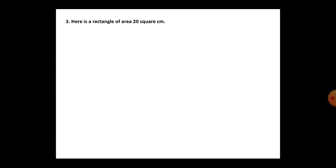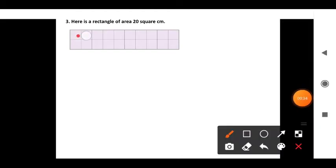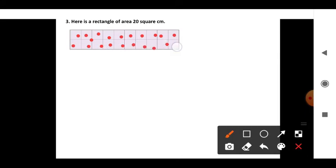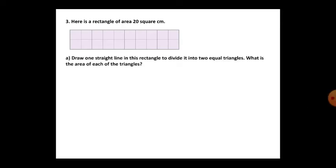Here is a rectangle of area 20 square centimeters. To find the area, you have to count the squares inside that rectangle. Count them: 1, 2, 3, 4, 5, 6, 7, 8, 9, 10, 11, 12, 13, 14, 15, 16, 17, 18, 19, 20. There are 20 squares, so the area is 20 square centimeters.